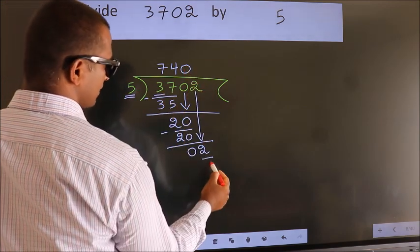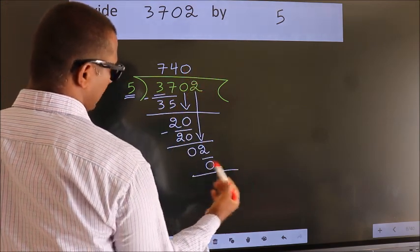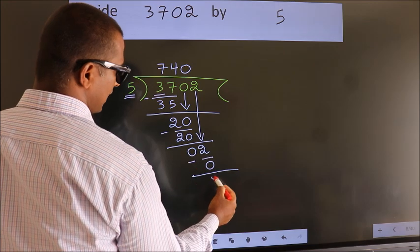So, 5 into 0, 0. Now we subtract. We get 2.